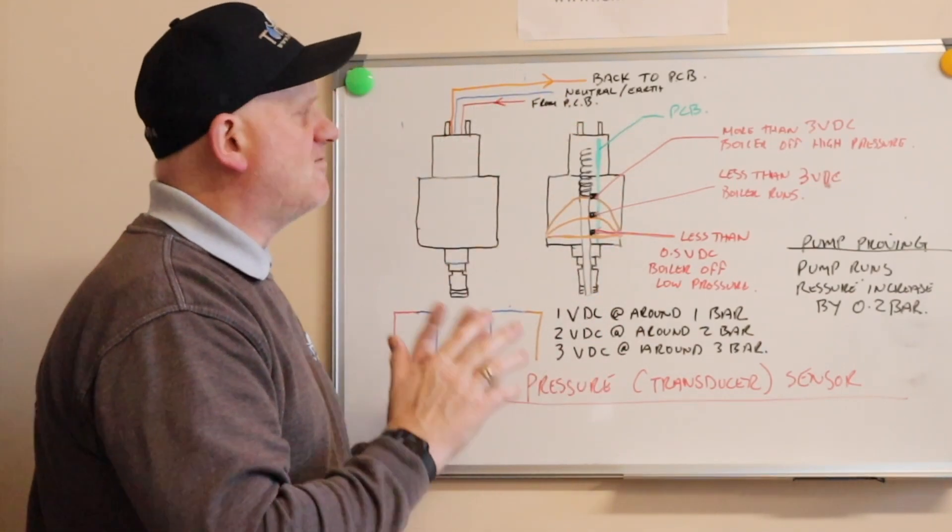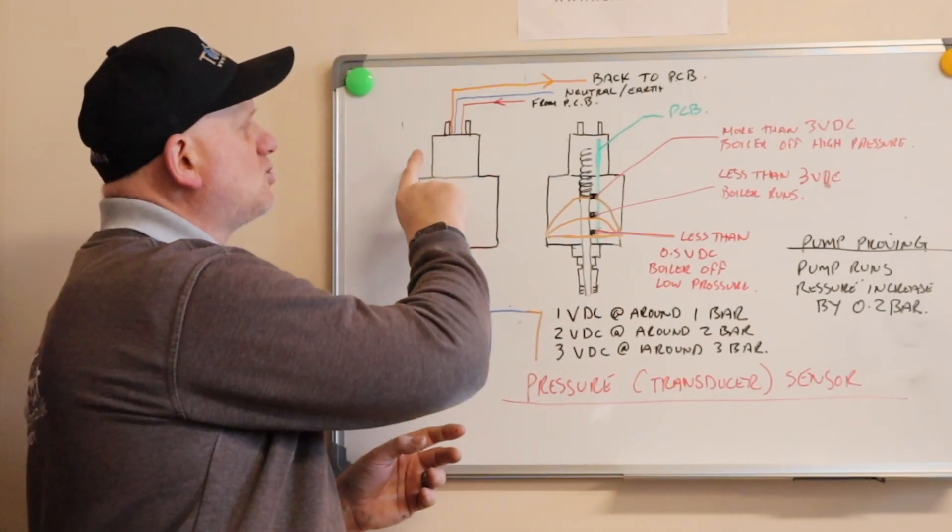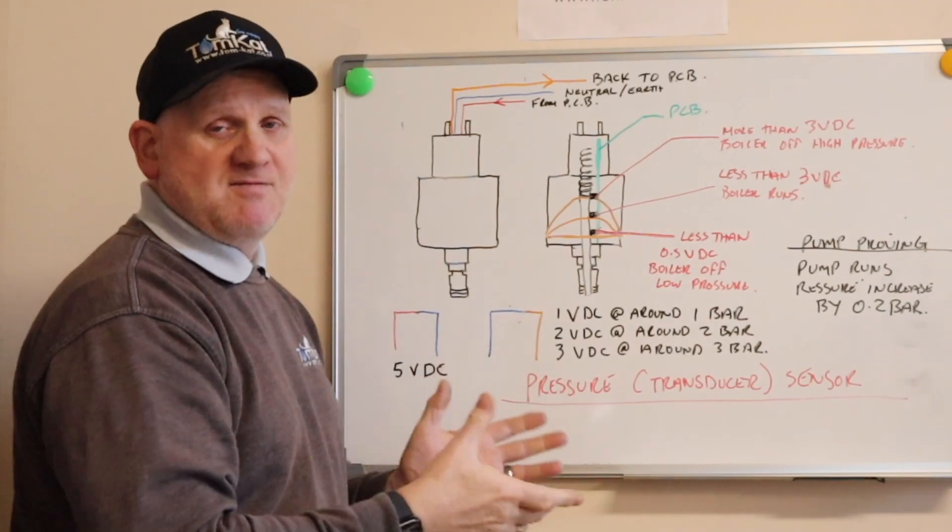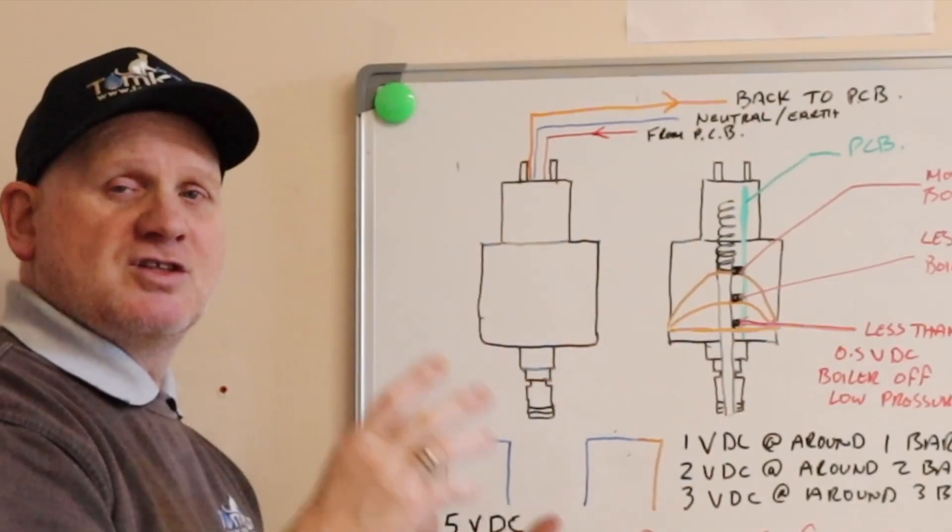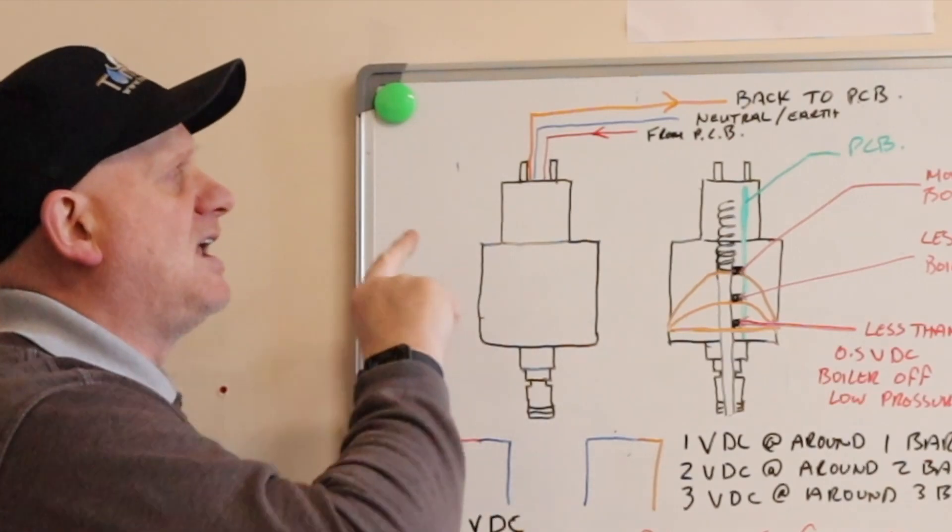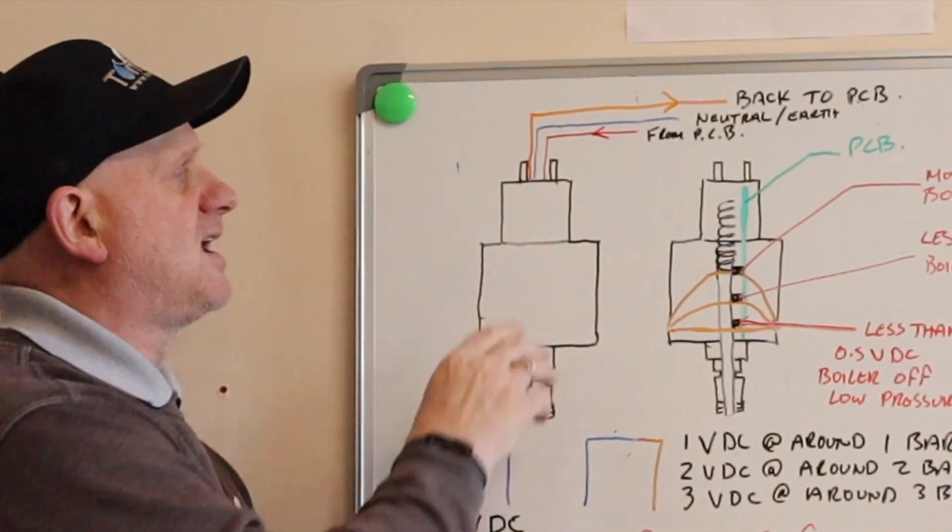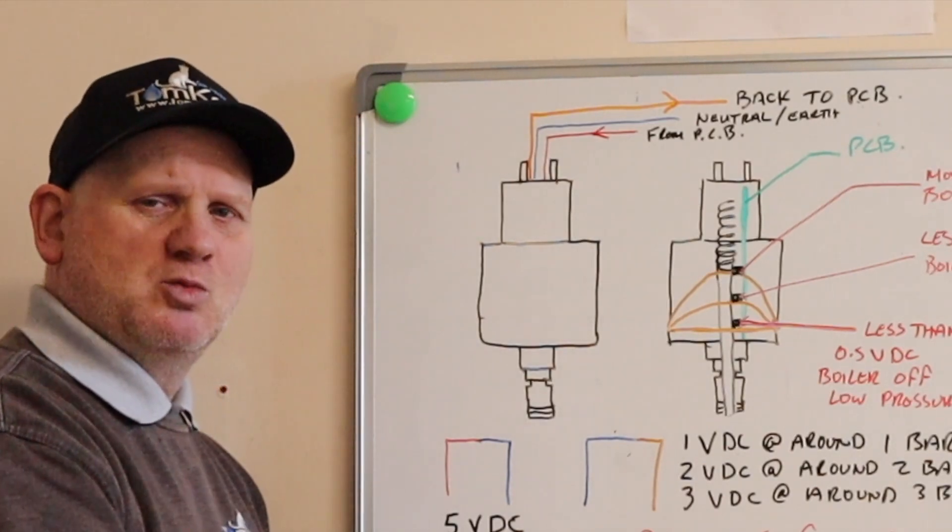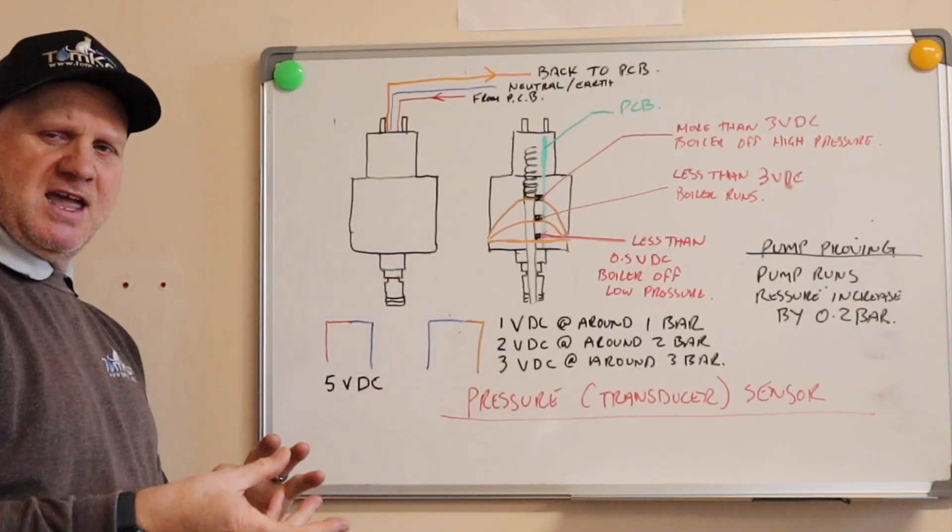You need to check with the manufacturers or look in the manufacturer's instructions to find out which one is bringing power from the main PCB in voltage DC and which one is taking power back to the main PCB. So as you can see, I've got a red one bringing power in and the orange one going back, and then the blue one is like a neutral earth wire to make it work.